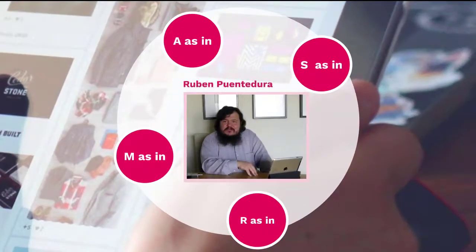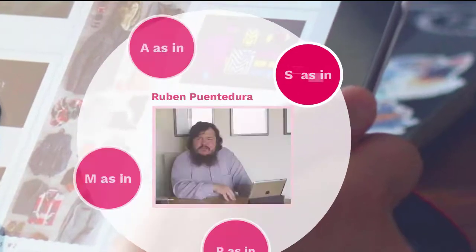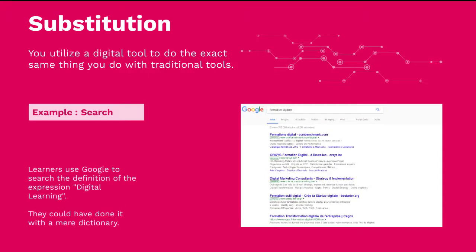The SAMR model was created by Ruben Puentedura, an American consultant, and SAMR is an acronym. S stands for substitution, meaning you do the exact same thing with a digital tool that you actually do with traditional tools.